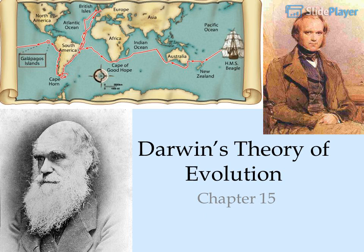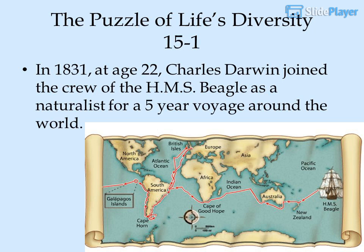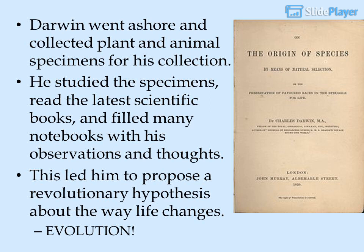Darwin's Theory of Evolution, Chapter 15: The Puzzle of Life's Diversity. In 1831, at age 22, Charles Darwin joined the crew of the HMS Beagle as a naturalist for a five-year voyage around the world. Darwin went to shore and collected plant and animal specimens. He studied the specimens, read the latest scientific books, and filled many notebooks with his observations and thoughts. This led him to propose a revolutionary hypothesis about the way life changes.